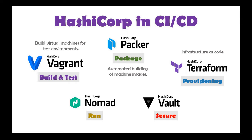Nomad is a workload automation and orchestration tool. You can use it for orchestrating Docker containers and other components. It's not as heavy as Kubernetes, but it's a lightweight orchestration tool you can use to manage the availability of different applications using Docker containers. You can have a look at the HashiCorp documentation for more details.